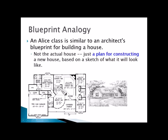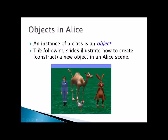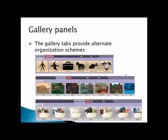It's like a blueprint — it shows how the object will be constructed, but you don't have to worry about actually building it because the programming does that. It's a blueprint of the parts it has: how many arms, how many legs, what color, and all the actions it can perform. An instance of a class is an object — the objects you drag into your Alice world are called instances. You can create an instance from these galleries, which are organized in several different ways.